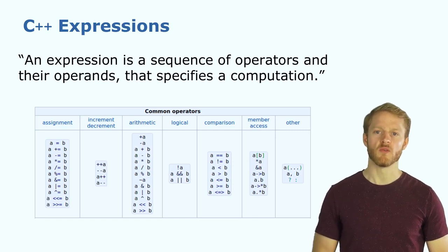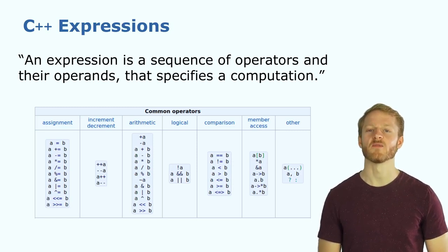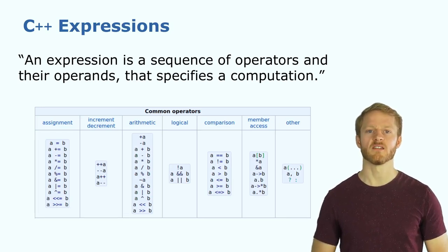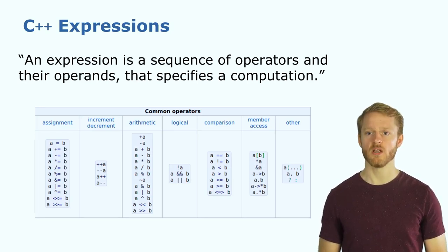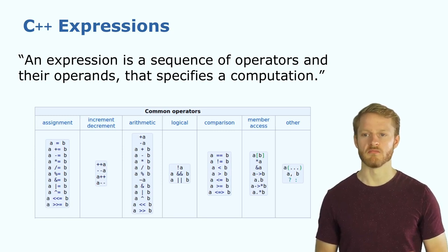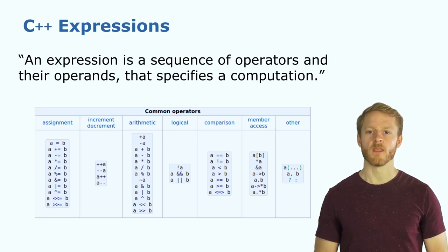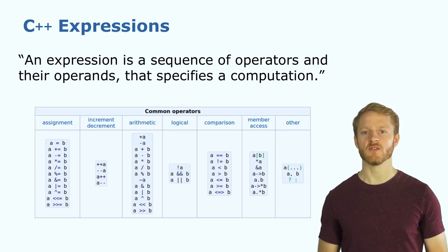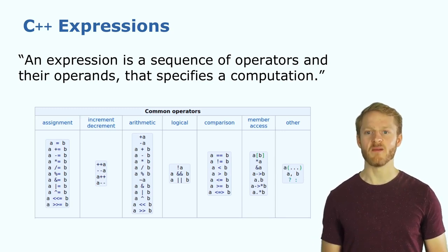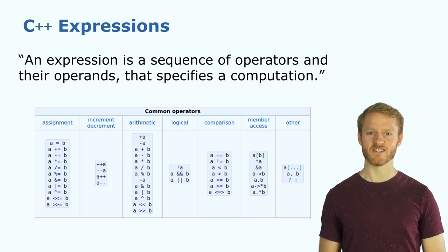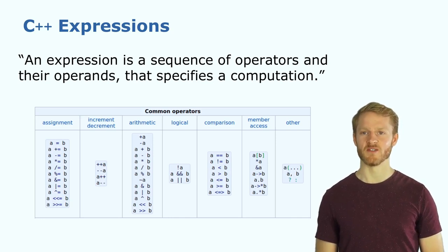Continuing closer to programming: what are expressions? Expressions are operators and operands that specify some computation — for example, assignments, increment, decrement, arithmetic operations, logical operations, comparisons, among others. You will start using them as soon as you start programming and will realize you need them. You can always check the reference to know which one you want to use.